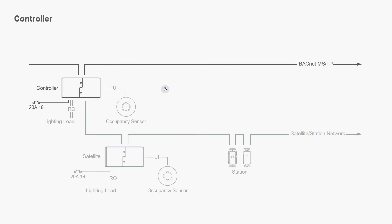Let's start with controller. Controller resides on the BACnet network, and in this case we have a zone control. Controller has inputs and outputs and features a line voltage feed for power. This is controller.